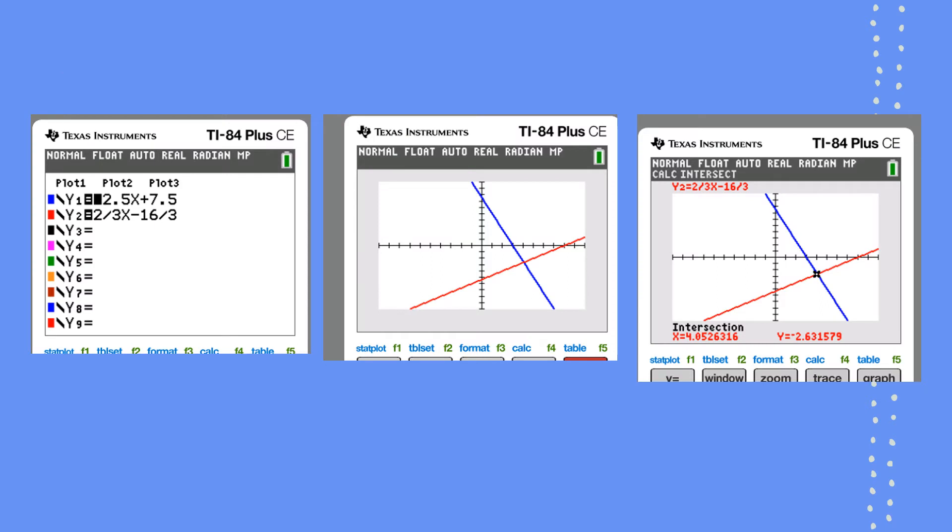Then entering this in a graphing calculator, y1 as the first equation and y2 as the second equation. And when we graph, you get a point of intersection. They meet, the intersection is at the point 4.0526 and y equal to negative 2.631.